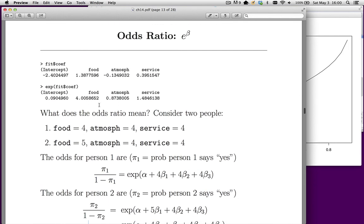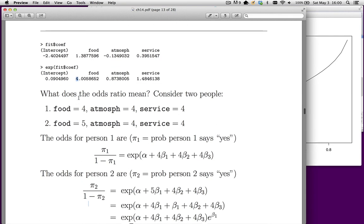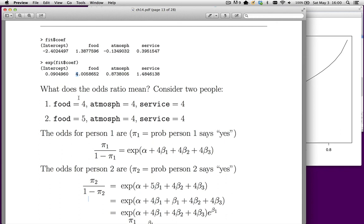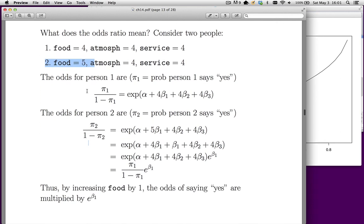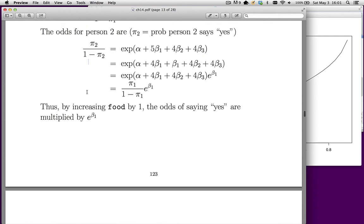The odds for person two are the odds for person one times e^β₁. Since e^β₁ = 4, the interpretation is: for every unit increase in food, the odds are multiplied by four. Person two's odds of returning are four times person one's odds. If another person had food = 3, atmosphere = 4, service = 4, and someone else had food = 5 with the same other values, the odds would be 16 times higher. These odds ratios are often used instead of the raw betas. That's a good place to stop.